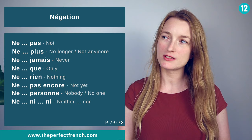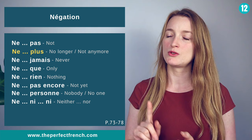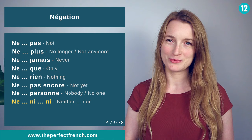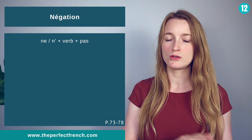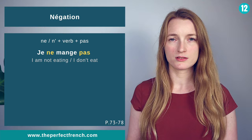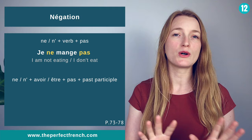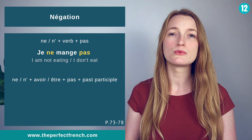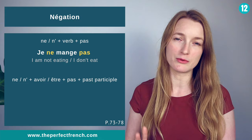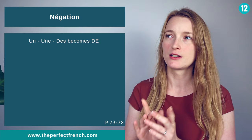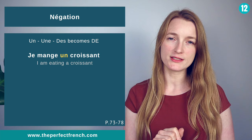Negation in French is made out of two words, or sometimes more: ne pas, ne plus, ne jamais, ne que, ne rien, ne pas encore, ne personne, and ne ni ni. Usually the two parts of the negation go around the verb. In passé composé: ne + auxiliary avoir or être + pas + past participle. Je n'ai pas vu le chien. Be careful that with negation, articles un, une, or des become de: je mange un croissant → je ne mange pas de croissants.